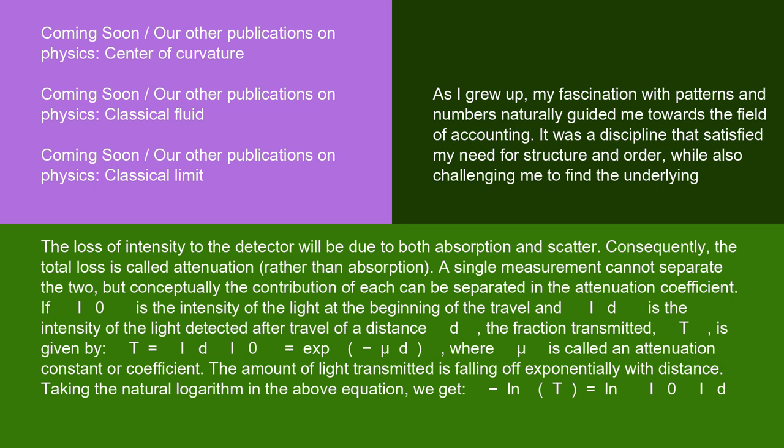If I₀ is the intensity of the light at the beginning of the travel, and I_D is the intensity of the light detected after travel of a distance d, the fraction transmitted T is given by T = I_D/I₀ = exp(−μd), where μ is called an attenuation constant or coefficient. The amount of light transmitted is falling off exponentially with distance. Taking the natural logarithm: −ln T = ln(I₀/I_D) = μd.